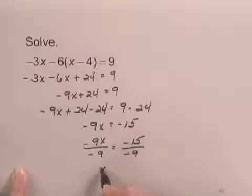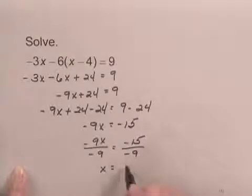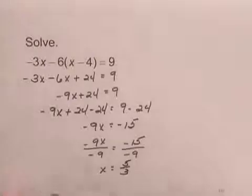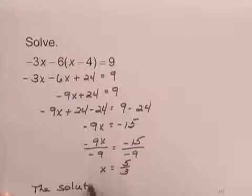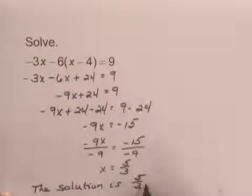That leaves me with x on the left. And when I simplify negative 15 over negative 9, I get a positive number. The number is 5 thirds. So we now know that the solution of the equation is 5 thirds.